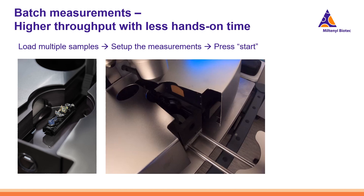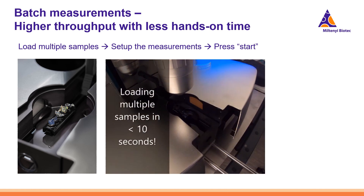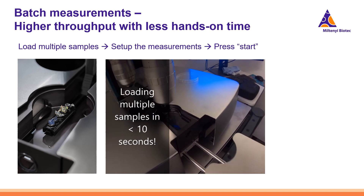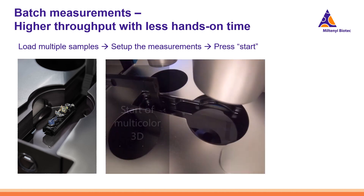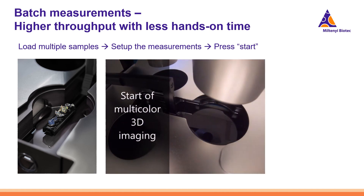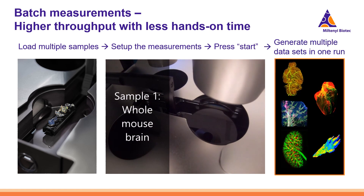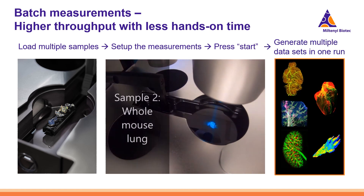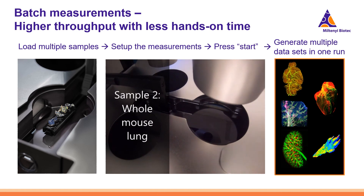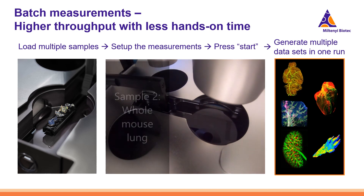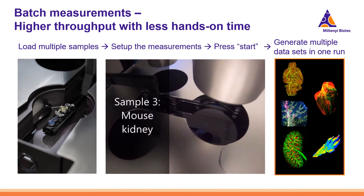The process of loading and imaging cleared samples is briefly demonstrated here, showing the seamless nature of the Ultra Microscope Blaze. Five different mouse organs are loaded in this example: mouse brain, lung, kidney, heart, and mouse paw. As I mentioned, you simply load multiple samples, set up the measurement, and press start — then you can generate multiple datasets in one run.